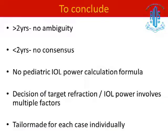To conclude, for IOL power calculation in children older than two years there is no ambiguity, but for those under two years there is no consensus. Many studies indicate different refractive goals and different factors, because so many variables are involved — the child's visual acuity, family compliance, and the status of the fellow eye. Therefore, IOL power calculation for a particular child has to be tailor-made for each individual case.